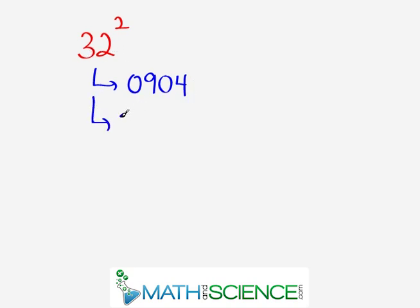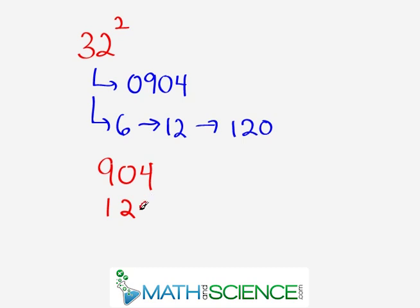Next, we multiply these two. 2 times 3 is 6. We double it, giving us 12. We add a 0, giving us 120. So, now what we have to do is just add these together. 904 plus 120. 904. Adding the 100 gives us 1004. Then, adding this gives us 1024. This is the final answer. 1024.